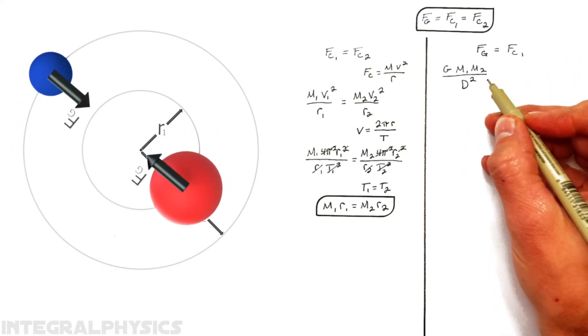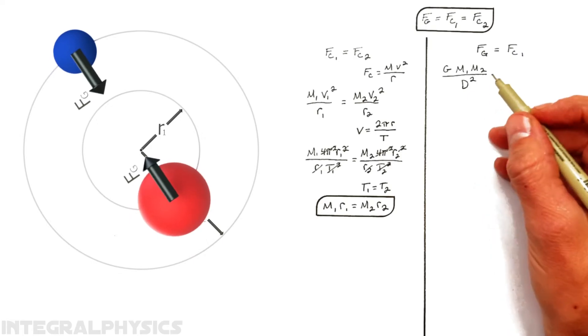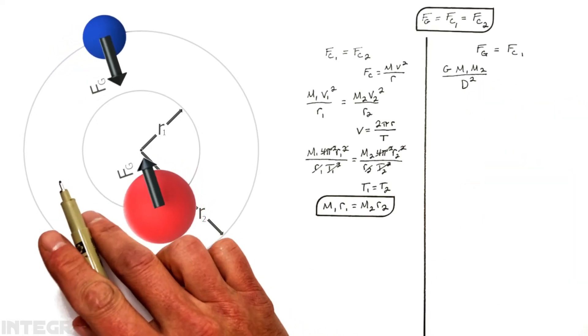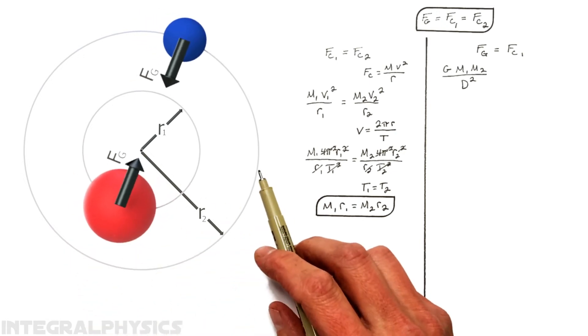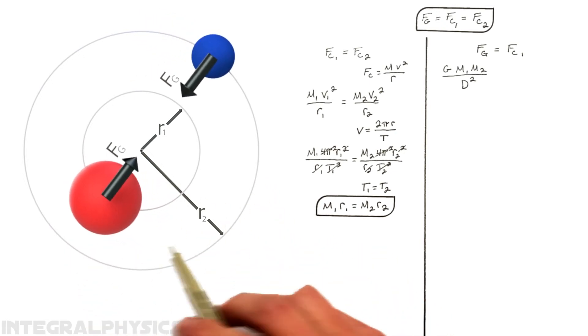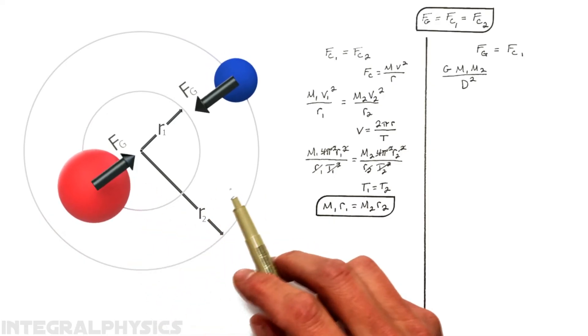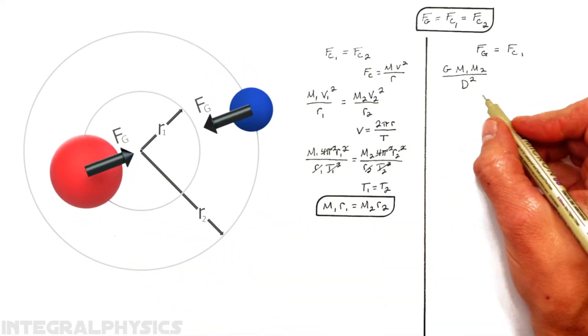And this distance is key here. You see, this distance is not the distance from one mass to the center of orbit. It's the distance from one mass all the way to the other. Or really, you could say it's the sum of the two radii combined. And that'll become important later on here.